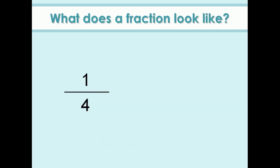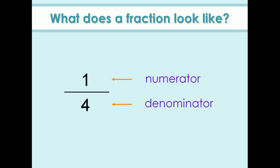What does a fraction look like? A fraction has two parts. The number on the top of the line is called the numerator. Here, one is called the numerator. It tells how many equal parts of the whole or set are taken. And the number below the line is called the denominator. It shows the total number of equal parts in the whole or the set. Here, four is the denominator.